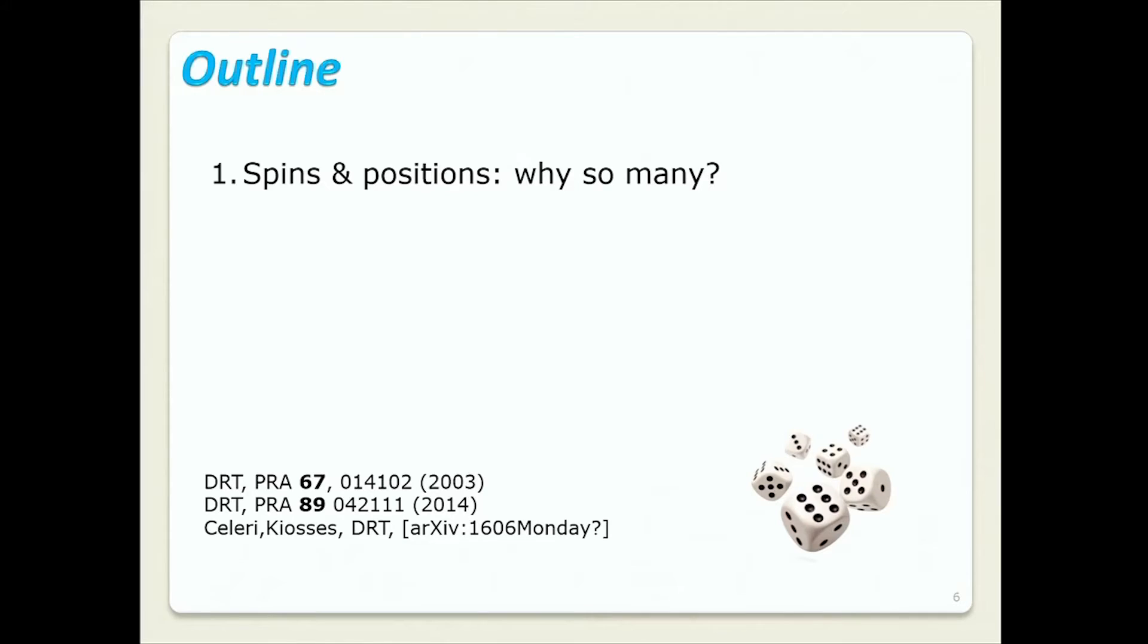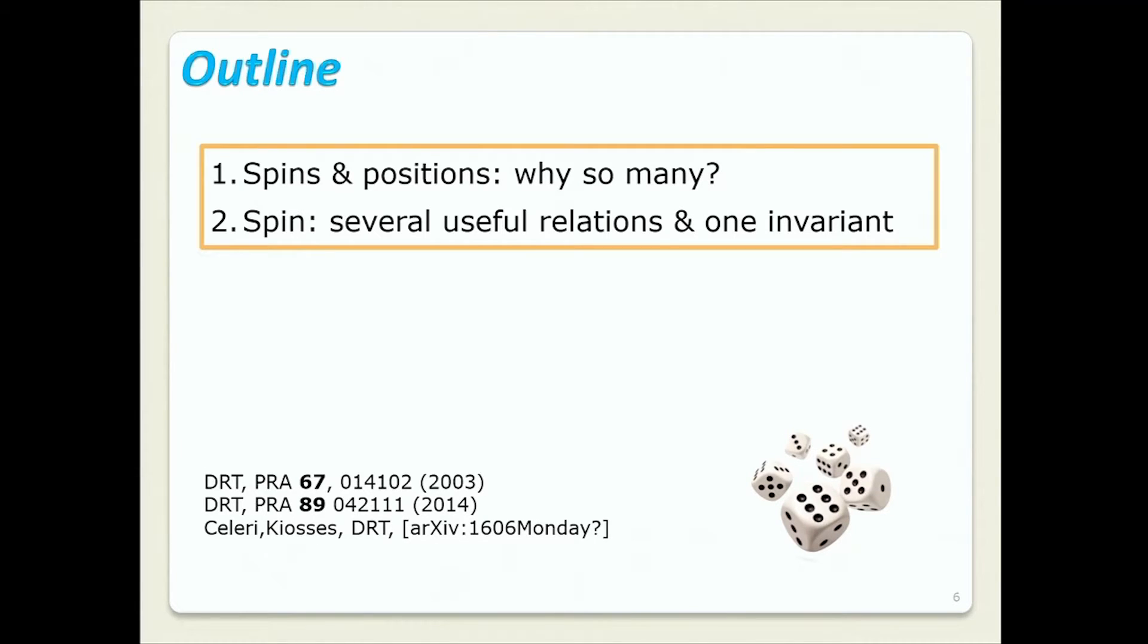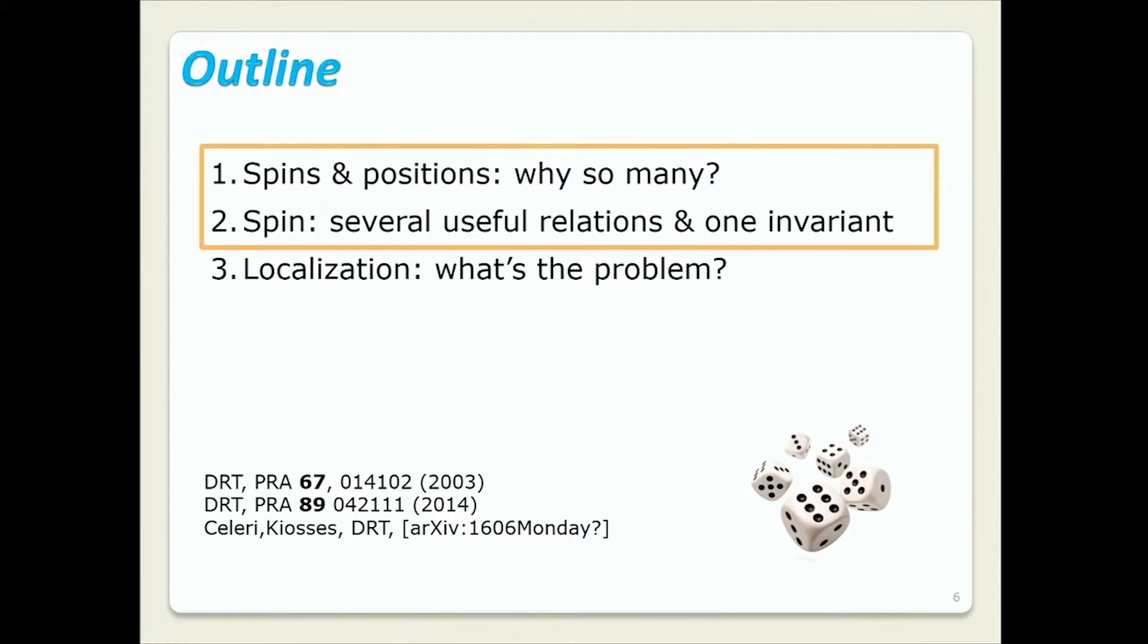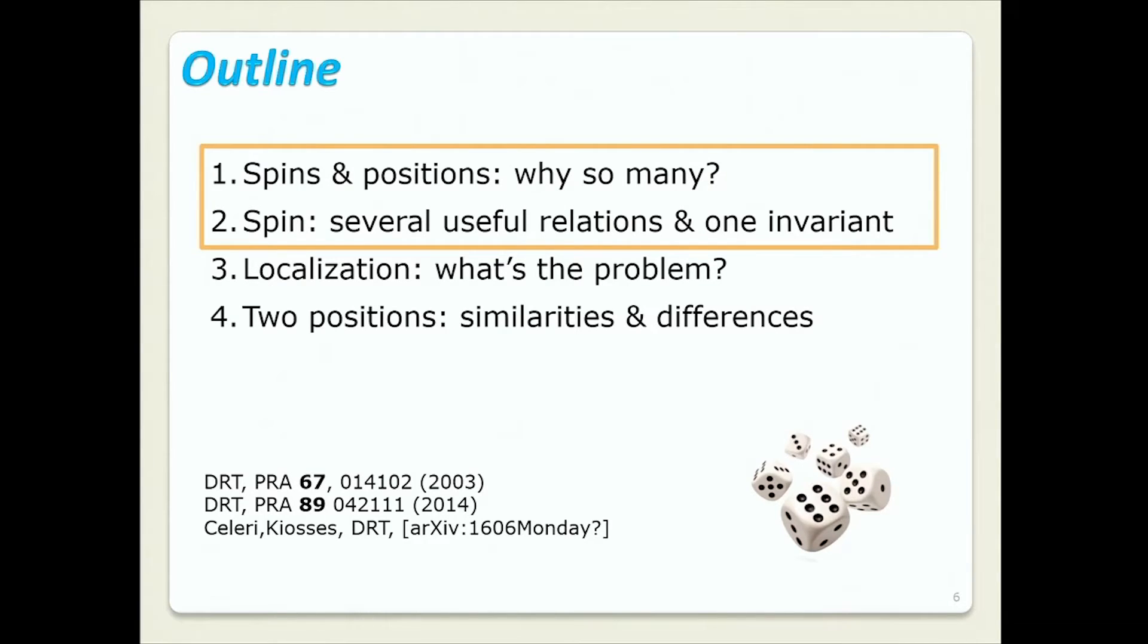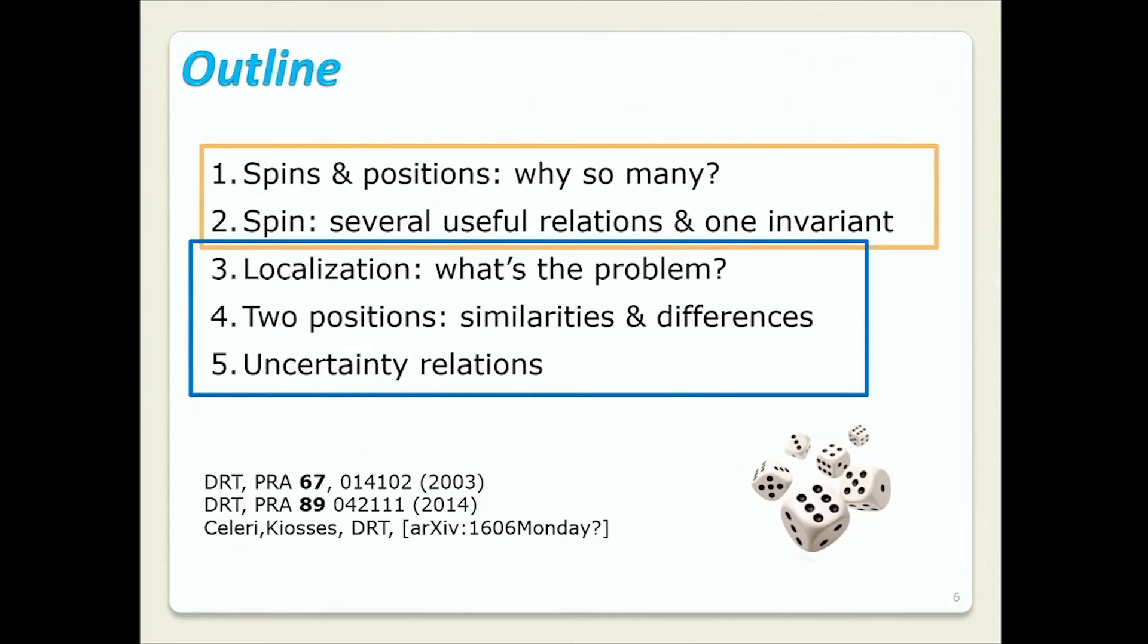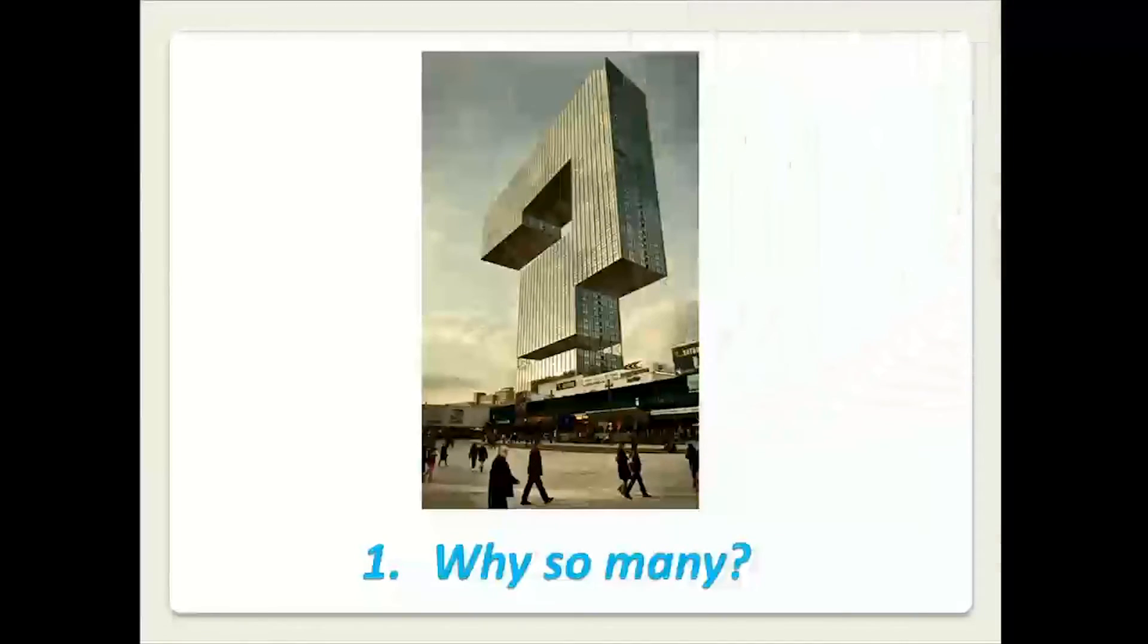So the outline. We'll talk about spins and positions. How they are related and why there are so many, possibly. Then several useful relationships between the spins and one invariant. I don't know what to do with it. But I'll show it to you and maybe we'll figure it out. Then we'll briefly revise localization. Again, after Juan Leon's talk this morning, it becomes tradition. I think it's a second RQI where Juan gives a talk about general aspects of localization in the morning, and I give about particular aspects in the afternoon. Very convenient. So it will be just one slide unless you want to talk more about it. Then we'll talk about two popular positions. So position POVMs that I would describe for localization. And we'll talk about the similarities and differences. Move to uncertainty relations. And a summary and what's going on.